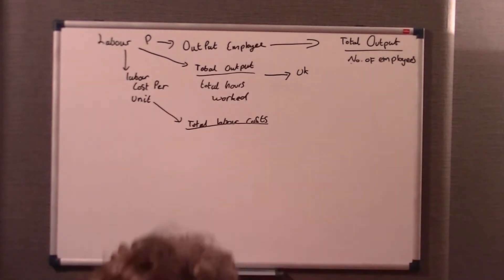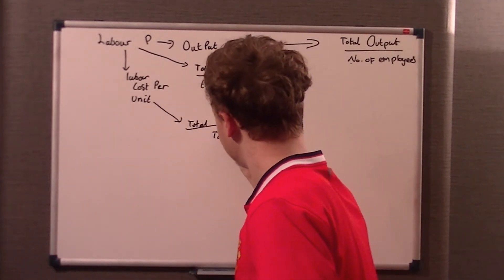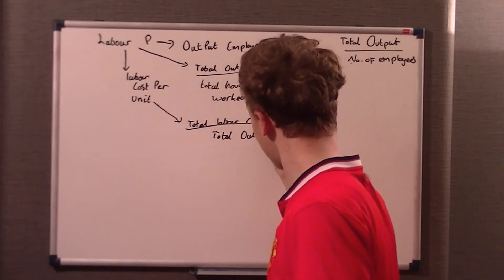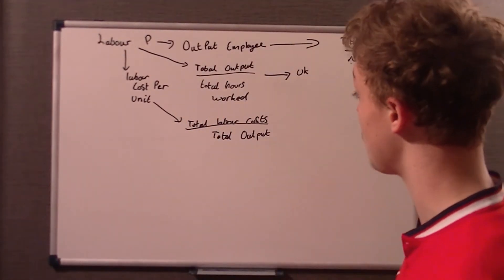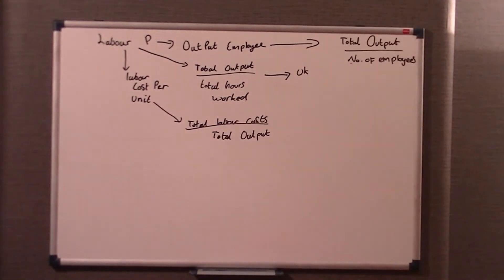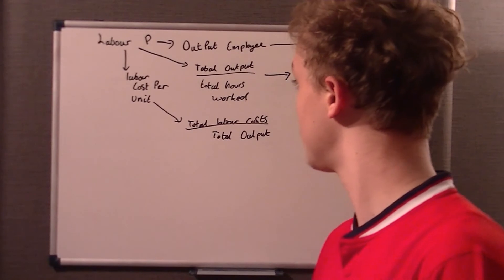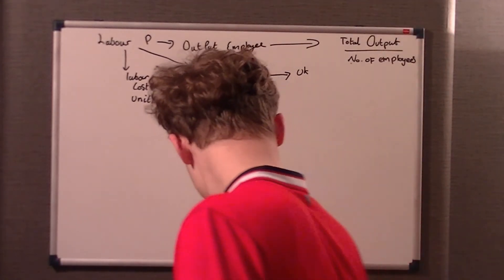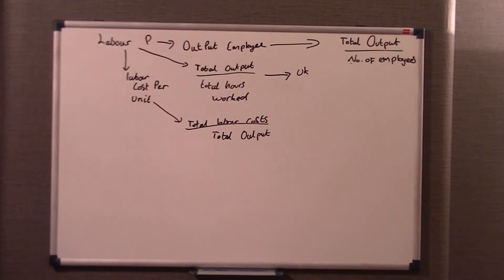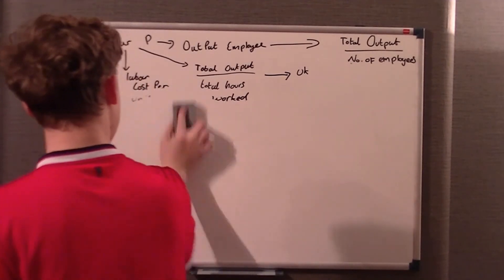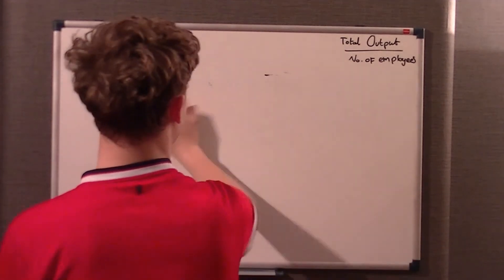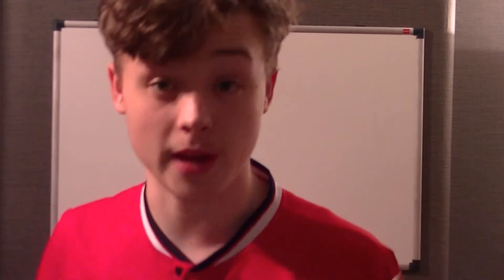Your total labour cost over the units produced — over total output — shows you how much it costs per unit. If you want to find out as a percentage, times by 100. Hopefully you've got that down — put those formulas somewhere. I'll make a summary at the end and we'll go over it.